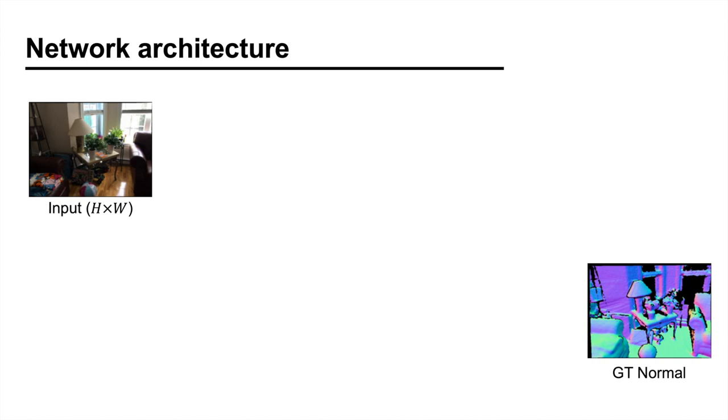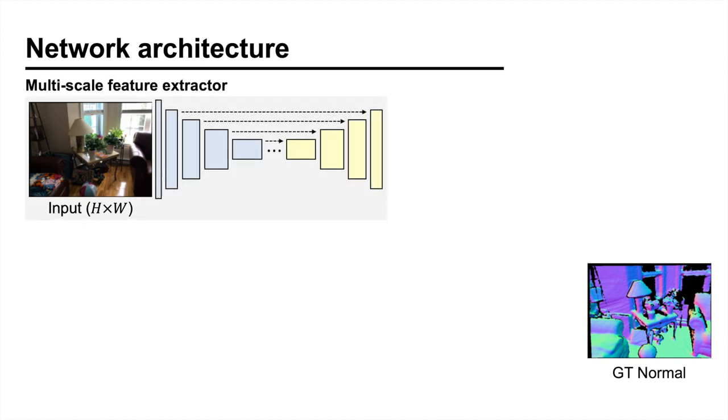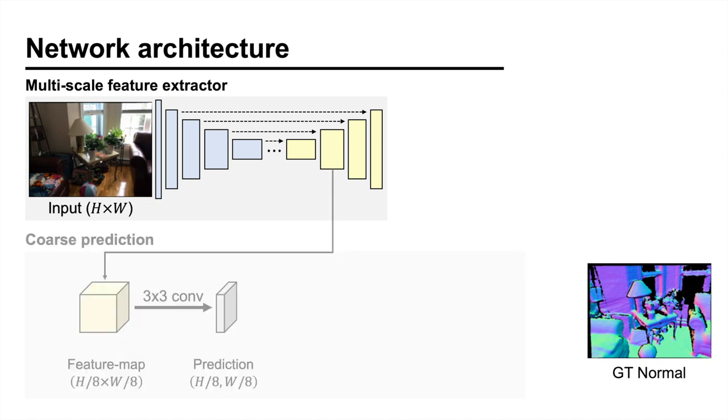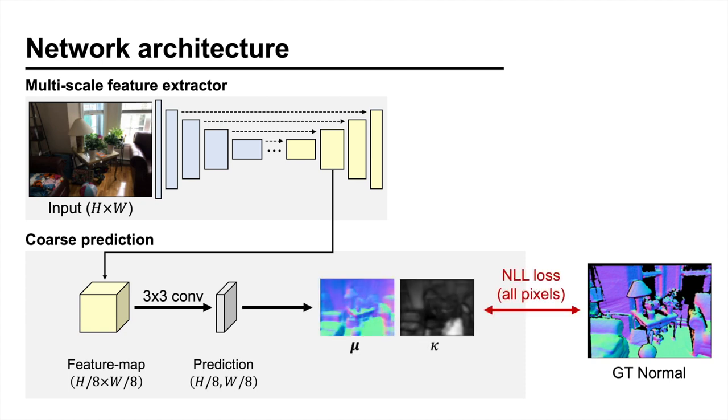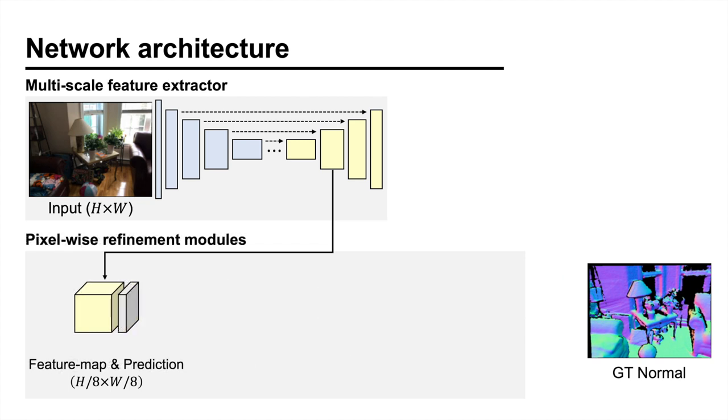Let's talk about the network architecture. Given the input image, we first extract multi-scale feature maps using a convolutional encoder-decoder. Then, the network makes an initial prediction in some coarse resolution, for which the training loss is applied to all pixels. Then, the coarse prediction and feature map are bilinearly upsampled by a factor of 2.